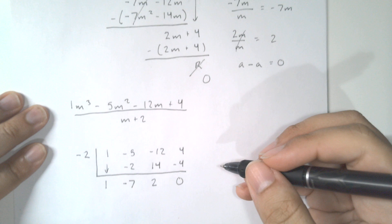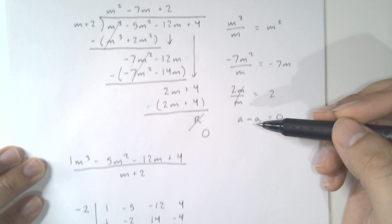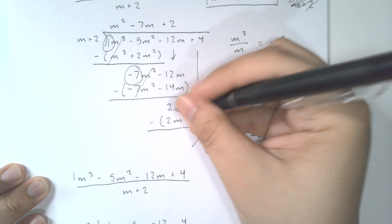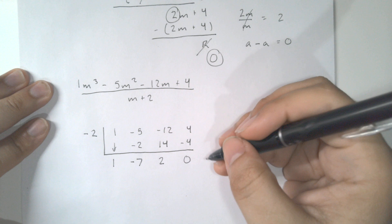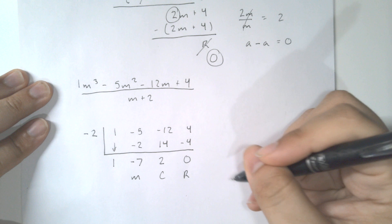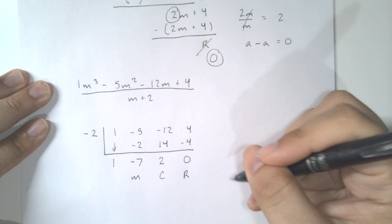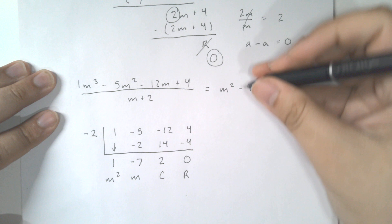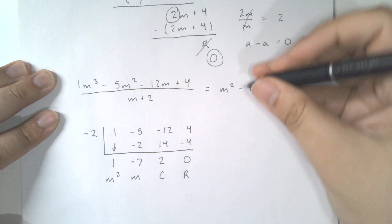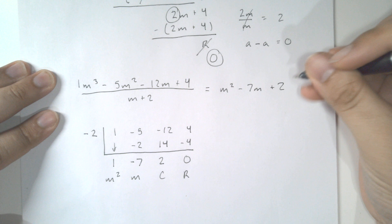We bypass all that long division work and just take these coefficients. The last number is your remainder, then your constant term, then m to the first, then m squared. So we interpret the answer as 1m² - 7m + 2 for the constant, and since we have no remainder, this is our final answer.